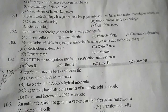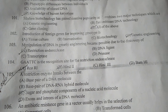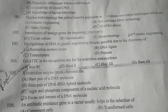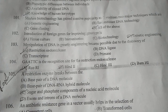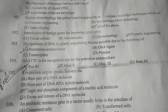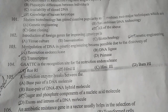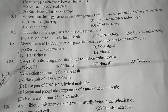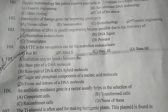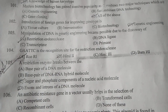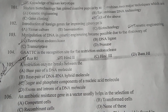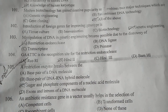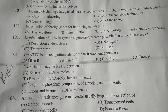Question number 102: Introduction of foreign genes for improving genotypes — the correct answer is D — genetic engineering. Question number 103: Manipulation of DNA in genetic engineering became possible due to the discovery of — the correct answer is A — restriction endonuclease. Question number 104: GATTC — guanine, adenine, adenine, thymine, cytosine — is the recognition site for the restriction endonuclease, and the correct answer is A.